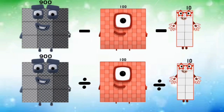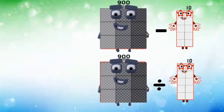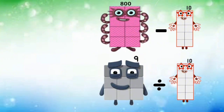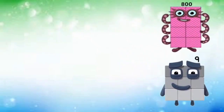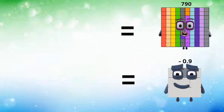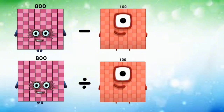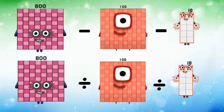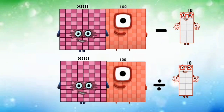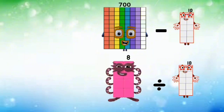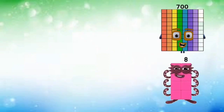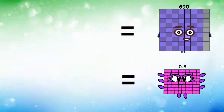900 subtracted and divided by 100 equals 800 and 9. 800 minus 10 and 9 divided by 10. 800 subtracted and divided by 100 equals 700 and 8. 700 minus 10 and 8 divided by 10 equals 690 and negative 0.8.